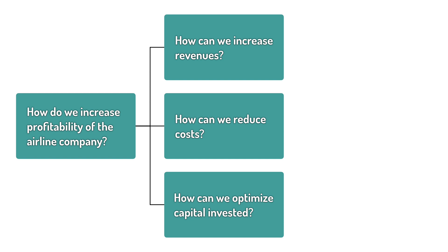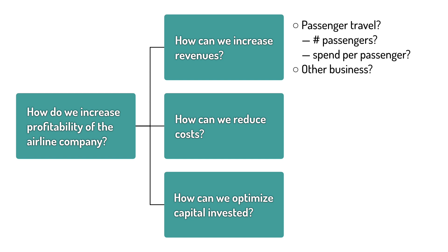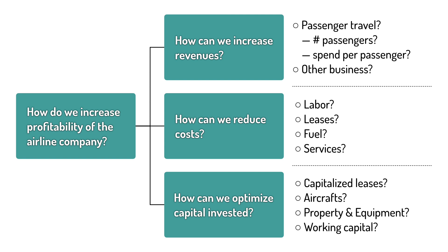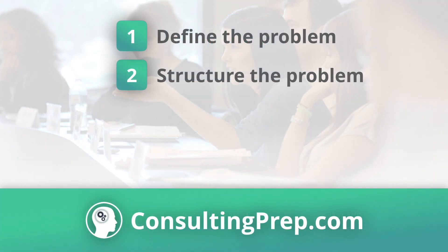We continue further disaggregating the problem with more open questions. On revenues: how can we increase revenues from passenger travel, how can we increase the number of passengers or the amount they spend, and how can we increase revenues from other businesses such as cargo, maintenance, and catering? On costs: how can we reduce labor, leases, and fuel costs? And on capital invested: how can we minimize capitalized leases, the aircraft we own, property and equipment, etc.? These open questions are what you need to structure the case and have a framework to analyze it.